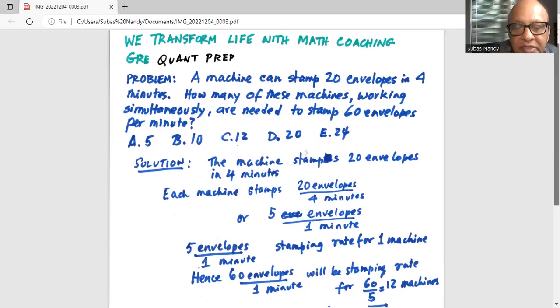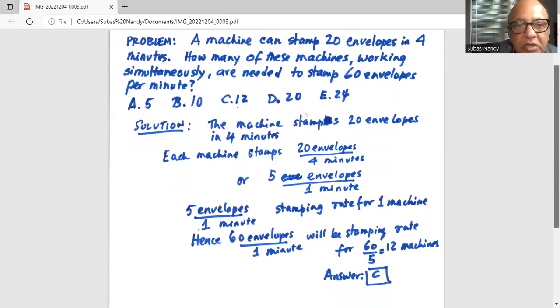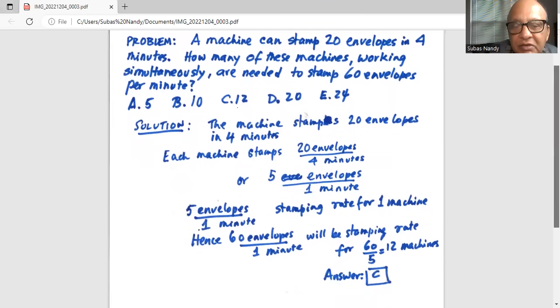Now we're talking about 60 envelopes per one minute. So that will be the stamping rate of 60 divided by five, or 12 machines. So the correct answer is option C, which is 12.